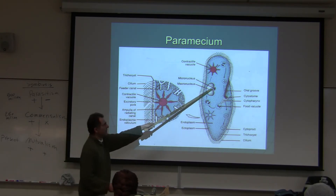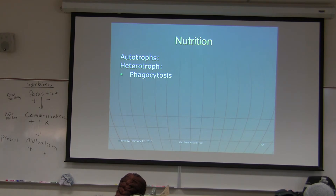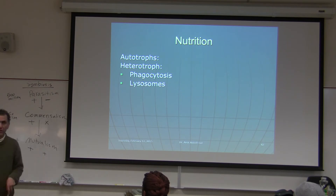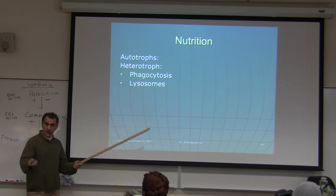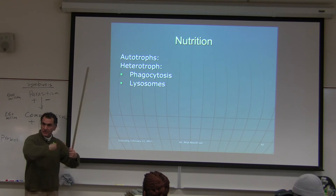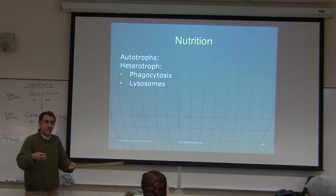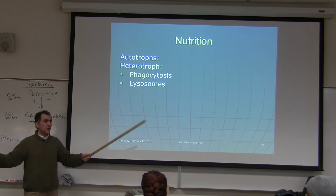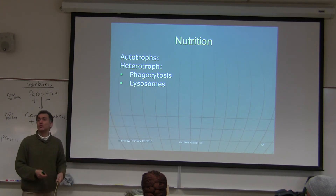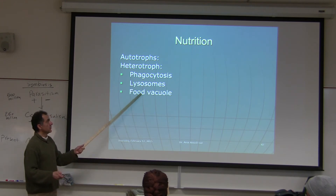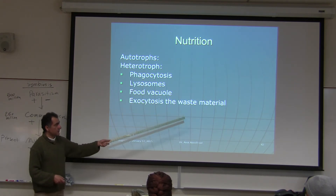Nutrition: autotrophs and heterotrophs. Phagocytosis involves lysosomes, which are full of enzymes. Lysosomes break down bacteria engulfed by white blood cells, as well as food particles ingested by cells. If a lysosome breaks and releases all enzymes at once, it kills the cell — that's why lysosomes are nicknamed the 'suicide bag of the cell.' Food vacuoles store food, and exocytosis removes waste material.